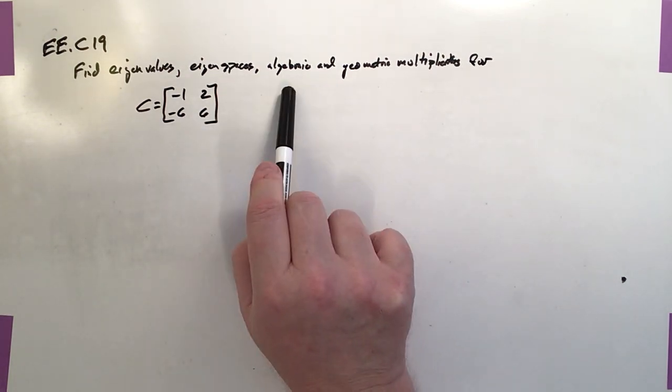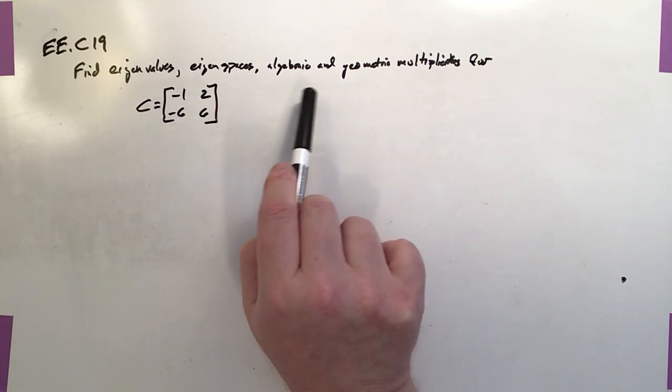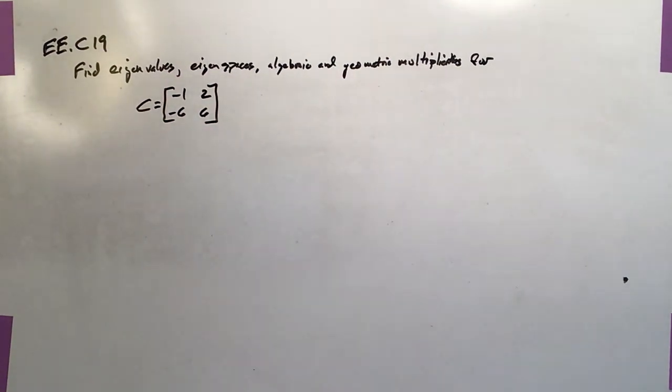There are subtle differences between the algebraic and geometric multiplicities, but for all intents and purposes, that's roughly what it indicates - what's the dimension of the eigenspaces.